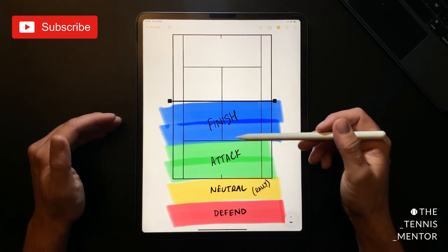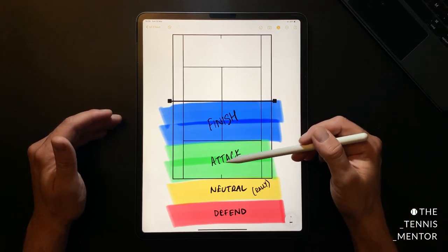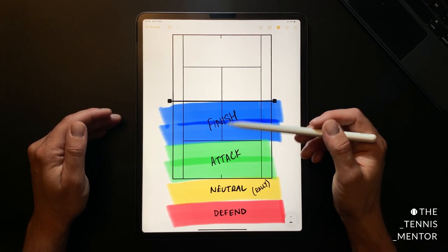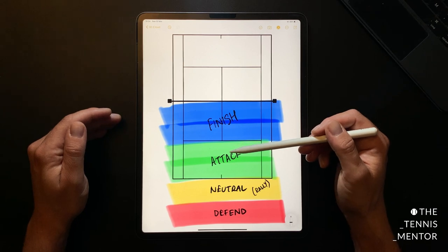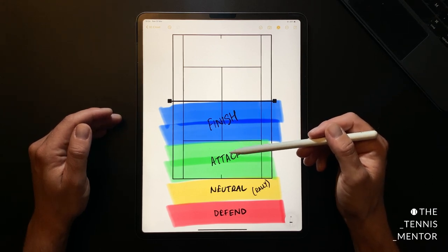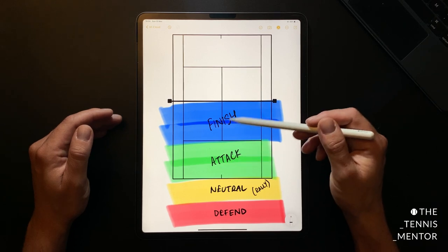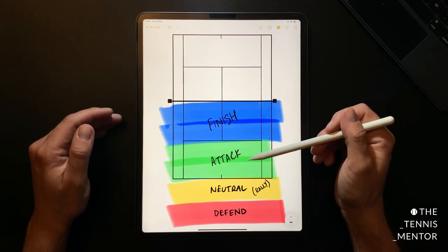Equally important when we talk about no man's land is if you're in this green attacking zone you don't want to hang around in this zone for too long. If you do you're going to have lots of balls landing at your feet and putting you into an awkward position. So when you get yourself into the green and the blue zone you don't want the point to go on much longer.